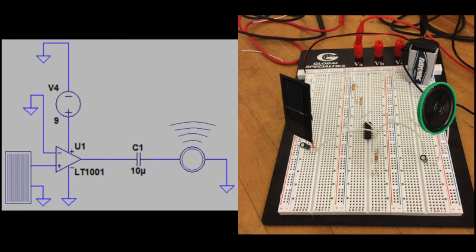For our original receiving circuit design, we had a photoresistor with one end grounded and the positive end passing through a 10 µF capacitor into the non-inverting terminal of the operational amplifier. The capacitor was placed there to clear any DC interference. For the op-amp, we used a 9-volt battery with the positive end entering the positive VCC terminal and the negative end being grounded.